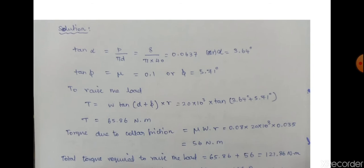To raise the load by the screw, the torque is W times tan of alpha plus phi, times the radius. This is the final formula.